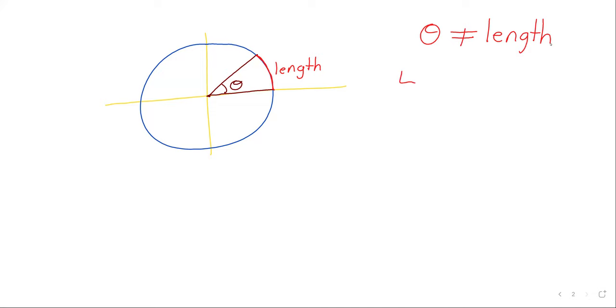That angle looks like it's about 45 degrees. That length should be pi divided by four. So you've got an angle, and you've got a length, and they're different.